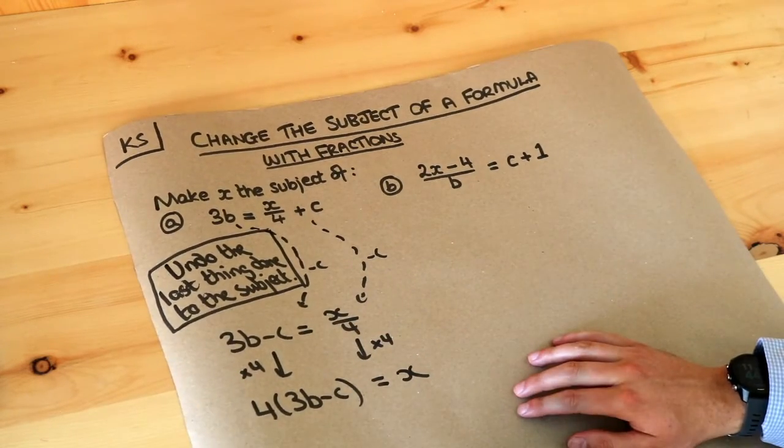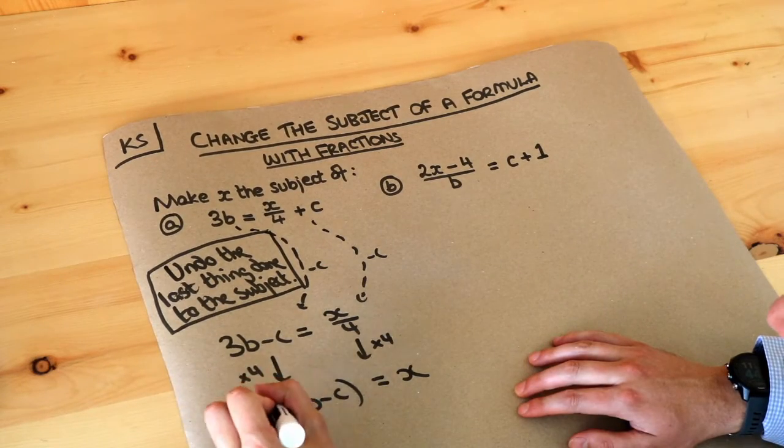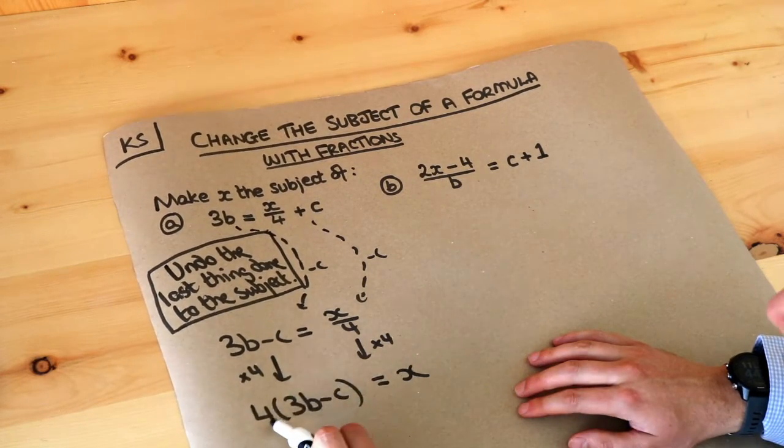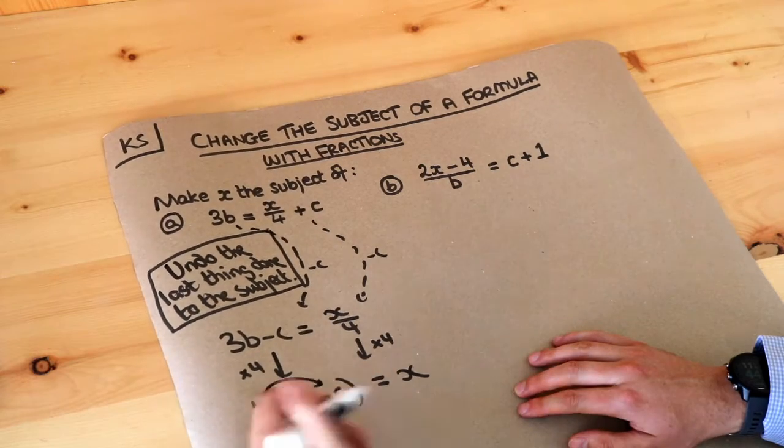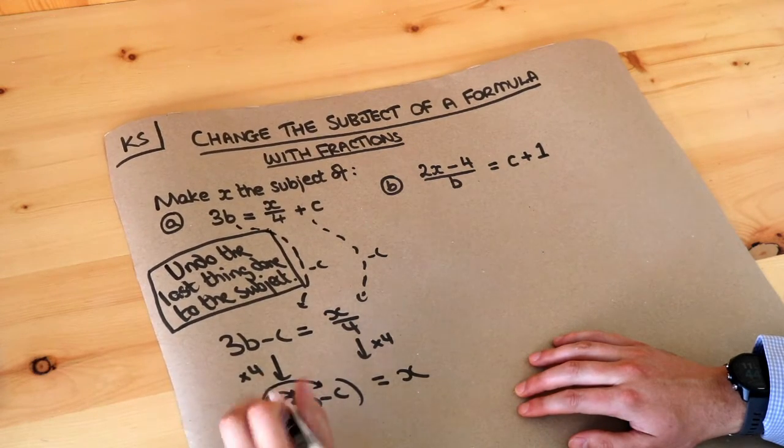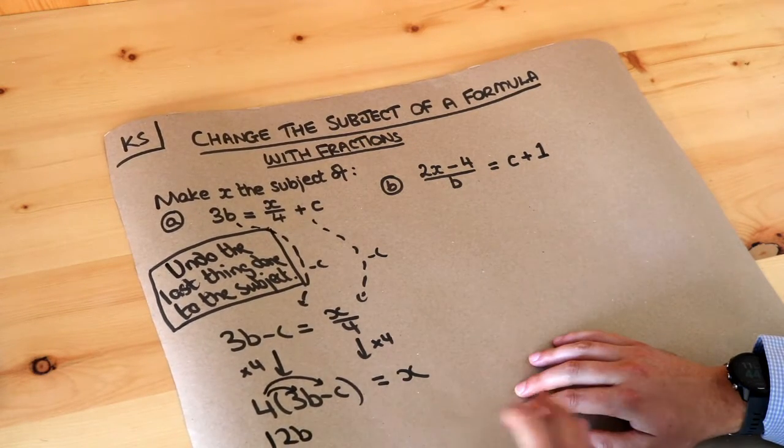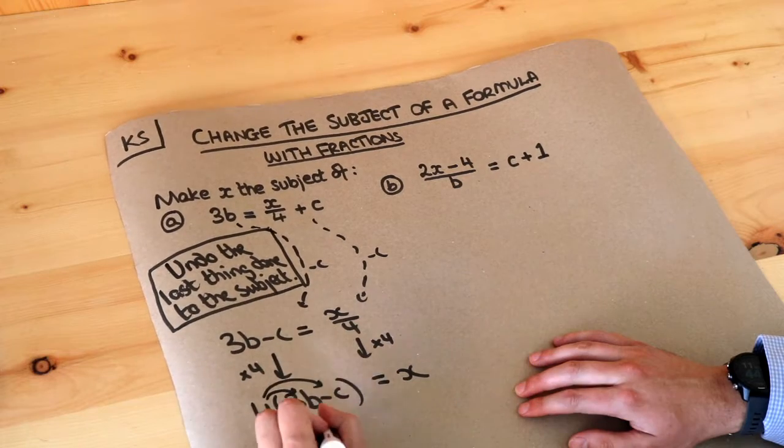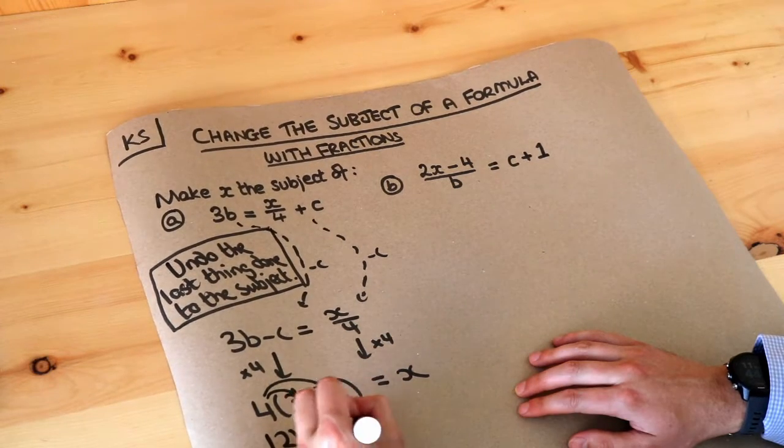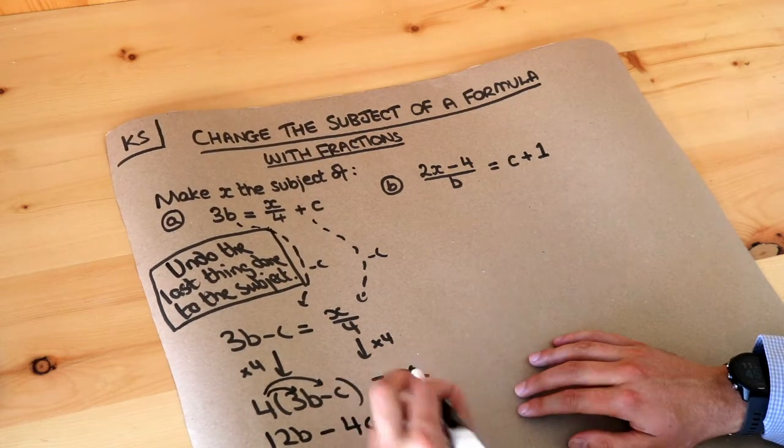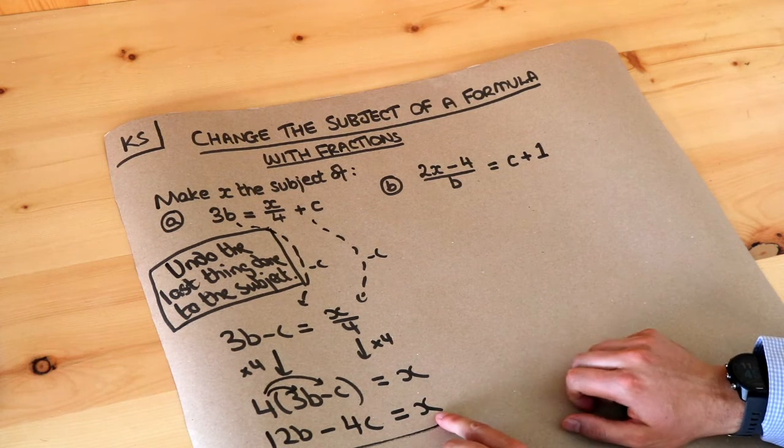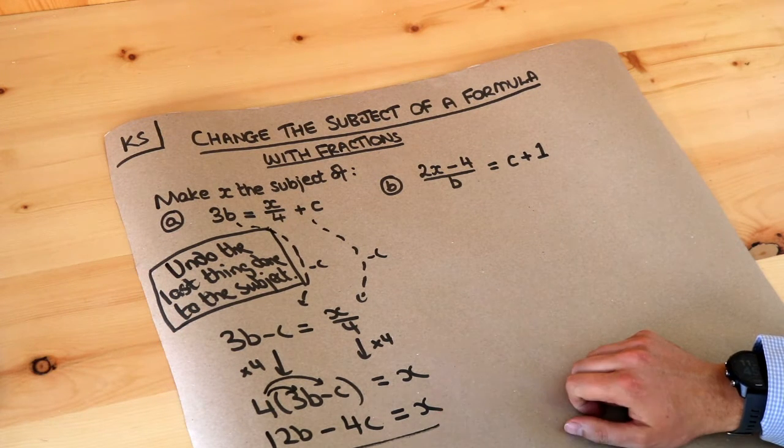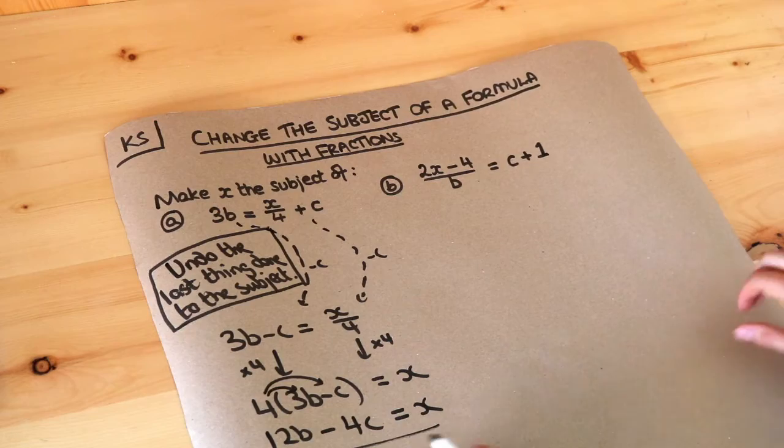Now that's the answer. We could leave it like that or if you prefer, we could expand it. Remember to expand a bracket, you multiply the thing on the front by each thing inside the bracket. So 4 times 3b is 12b and 4 times negative c is negative 4c. So that would be the final answer. We've got x on its own on one side of the equation. We could write x equals 12b minus 4c, but it's not necessary.